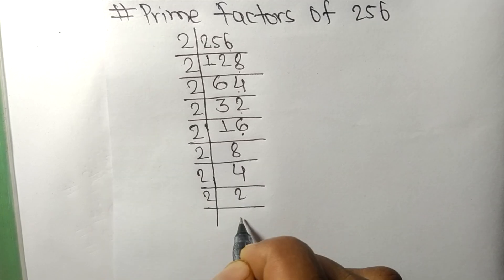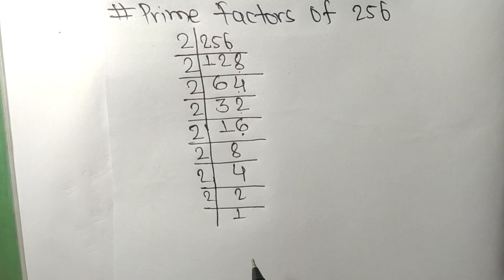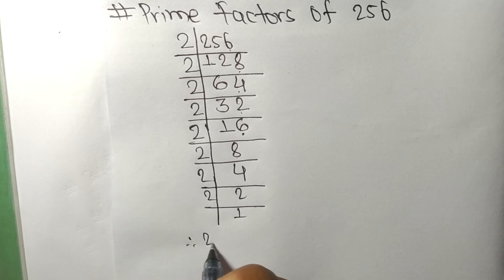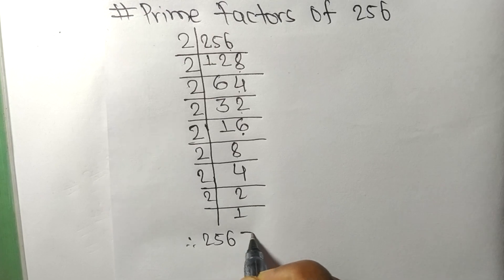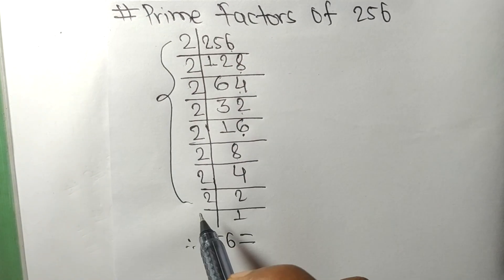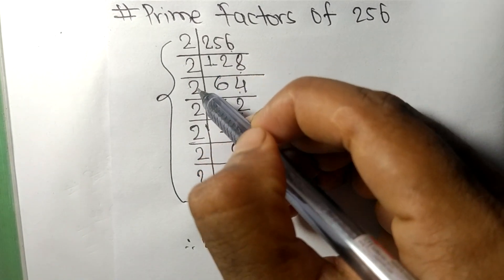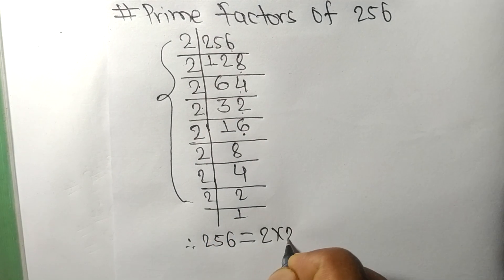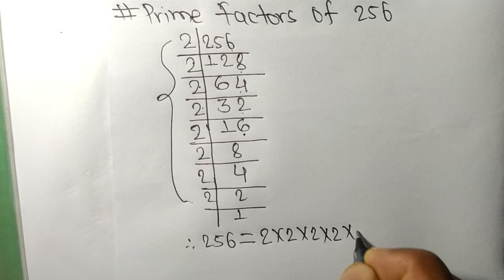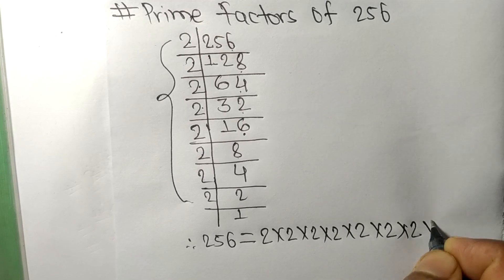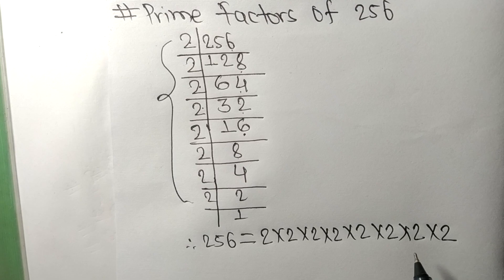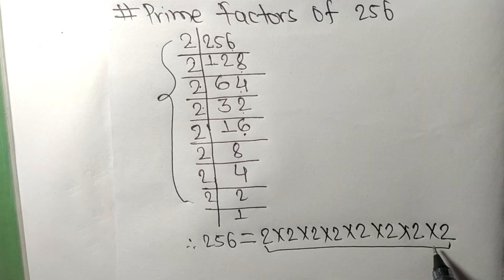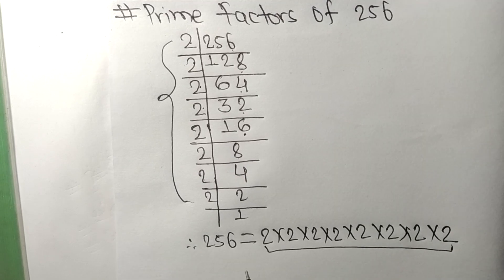And two times one is two. So 256 equals 2 multiplied eight times — that is, one, two, three, four, five, six, seven, eight. These eight twos are the prime factors of 256. So 256 = 2^8. That's it for today, thanks for watching.